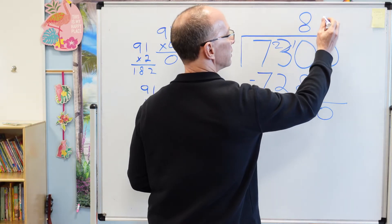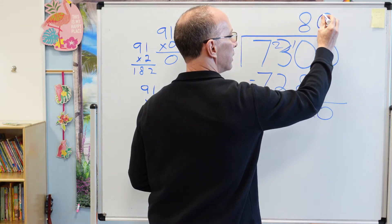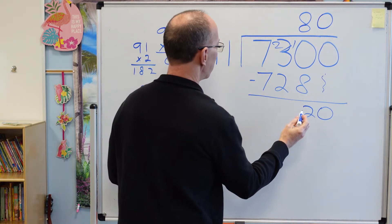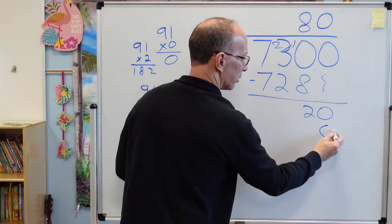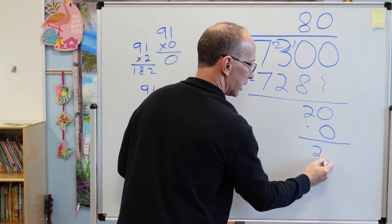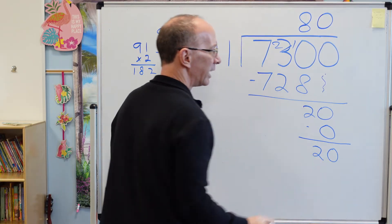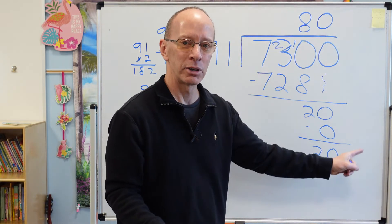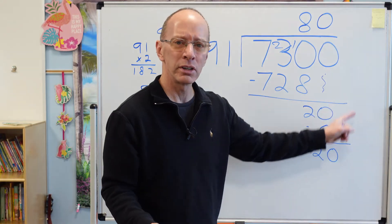Alright, so I'm going to put 0 right here. 0 times 91 is 0. Subtract. Then I have 20. And I bring the next number down. And you're like, well there's no number to bring down.